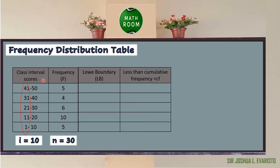We can add two columns in our table to list the lower boundaries and the less-than cumulative frequency of each class. To identify the lower boundary, you will subtract 0.5 from the lower limit of each class. The lower limits are 1, 11, 21, 31, and 41. So the lower boundaries are: 1 − 0.5 = 0.5, 11 − 0.5 = 10.5, 21 − 0.5 = 20.5, 31 − 0.5 = 30.5, and 41 − 0.5 = 40.5.